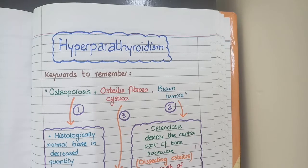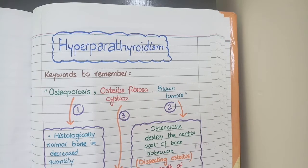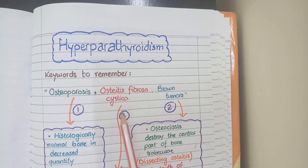In this video we will discuss the effects of hyperparathyroidism on bones. Hyperparathyroidism causes three principal lesions in bones: osteoporosis, brown tumors, and osteitis fibrosa cystica.